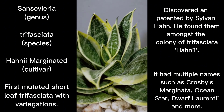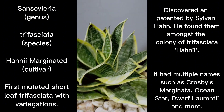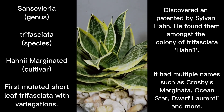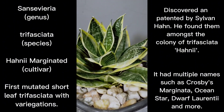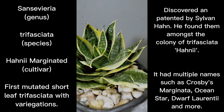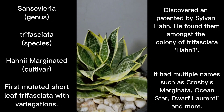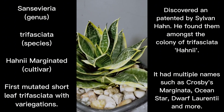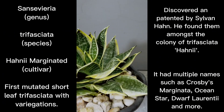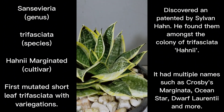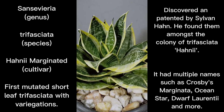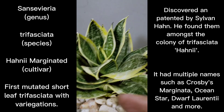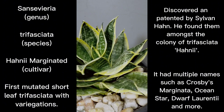Going back, the official name of the plant is Honey Eye Marginated. The cultivar was first published as Crossby's Marginata — I'll place that information on the side of this content. This particular cultivar was patented by Sylvan Han himself. He has his own nursery growing trifasciatas, and in his dwarf trifasciata Honey Eye colony, he discovered one mutation growing amongst the non-variegated Honey Eye plants.